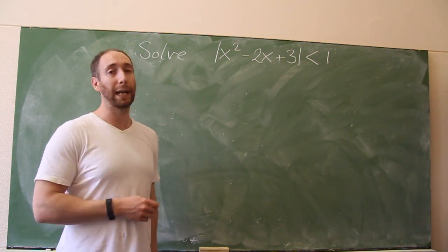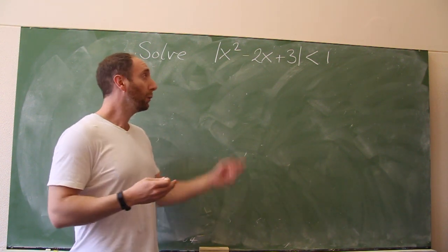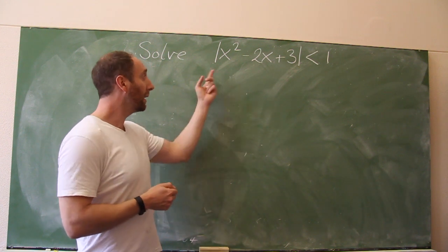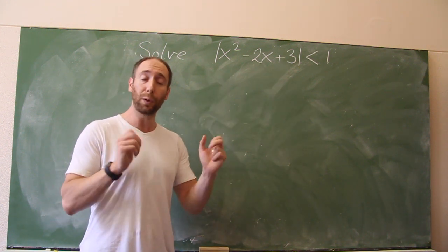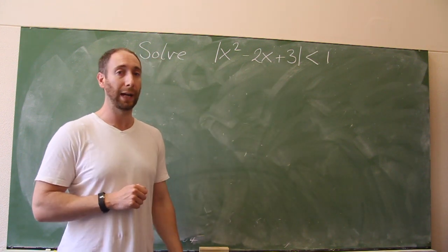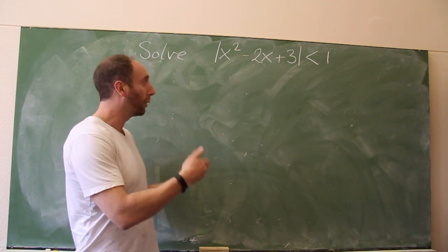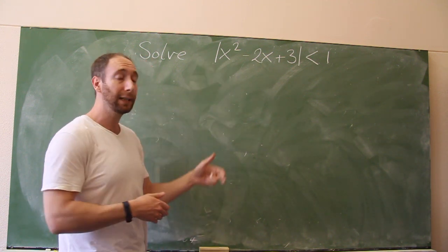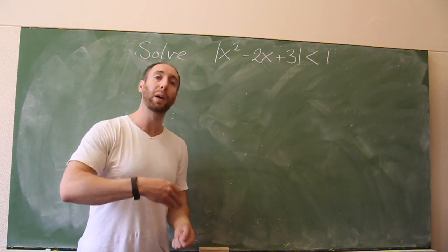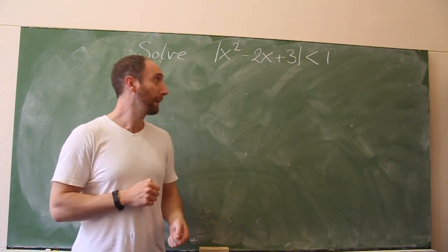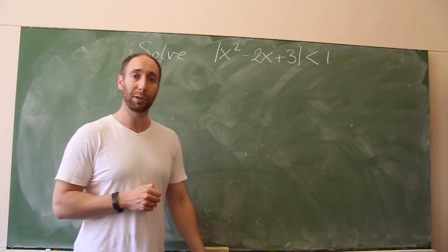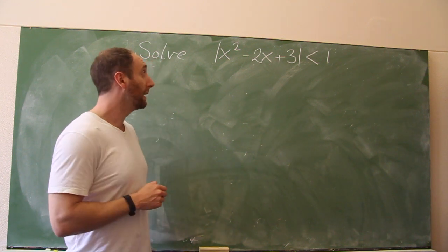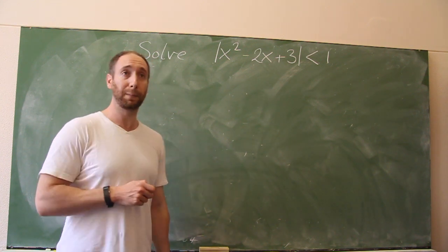What do we mean by pattern recognition? Well, we look at this and we see a pattern. The pattern we see is: here's an absolute value — I know what to do with an absolute value. I don't know what's going to happen next, but once you've found the next line, then we can start to ask where do we go from here. So what do we do when we have an absolute value? Well, the first thing to do in general is to write it as a piecewise function.